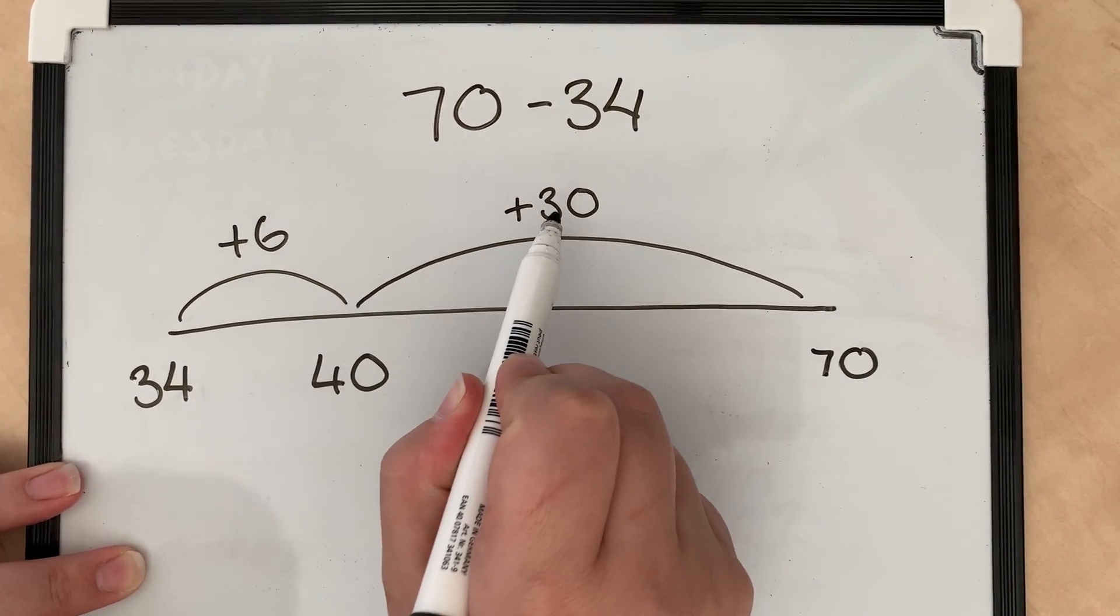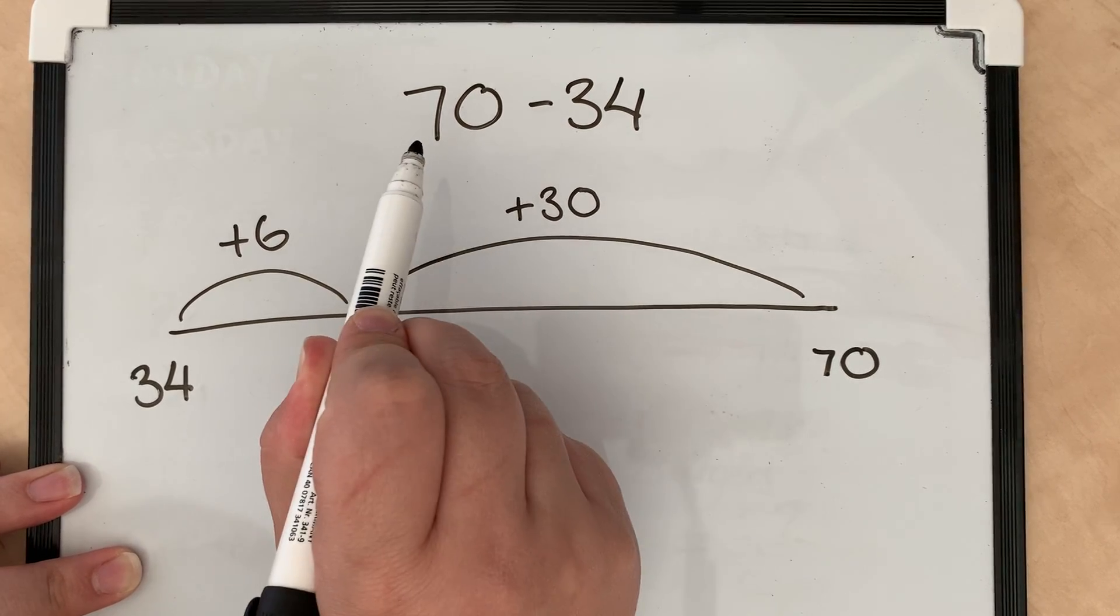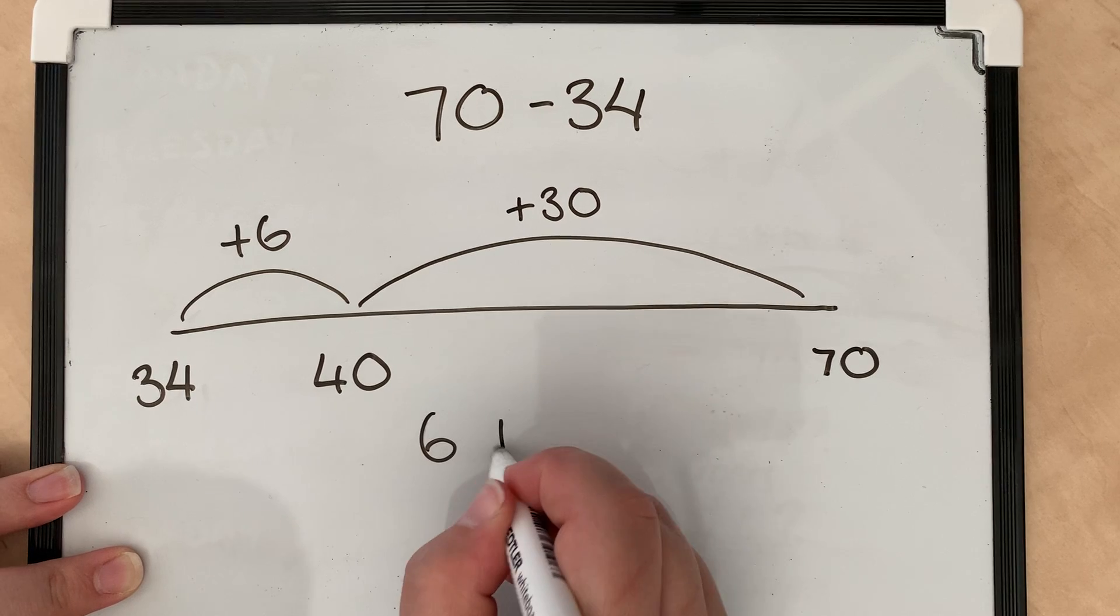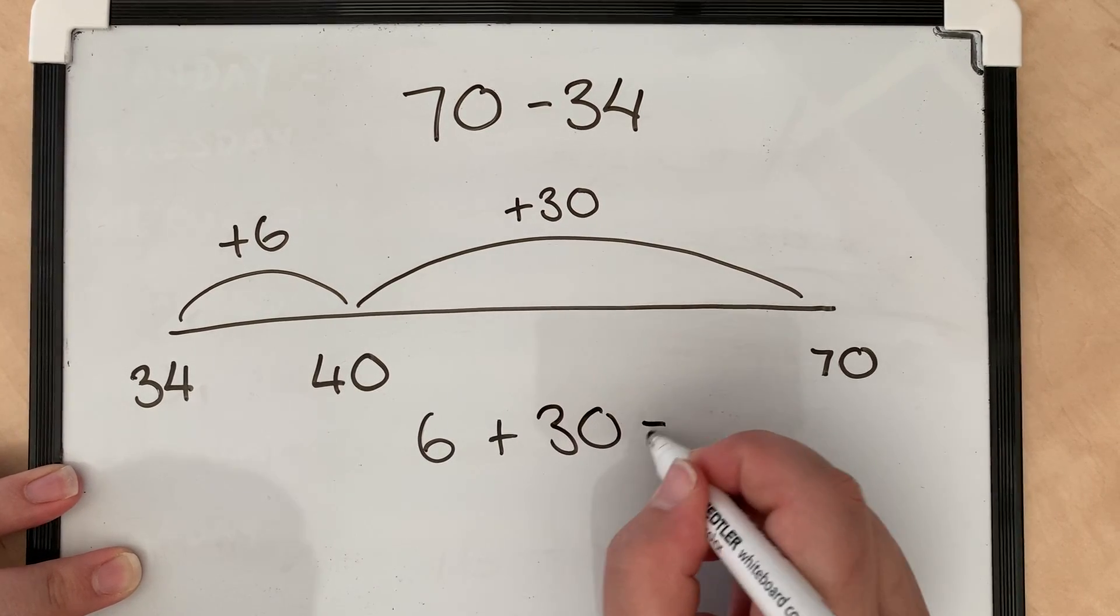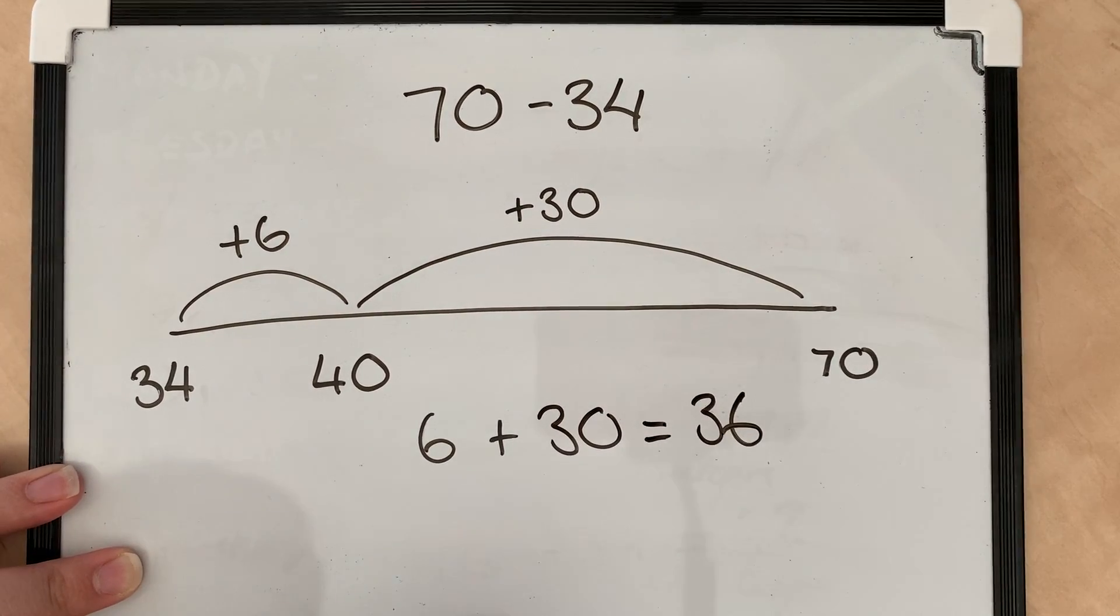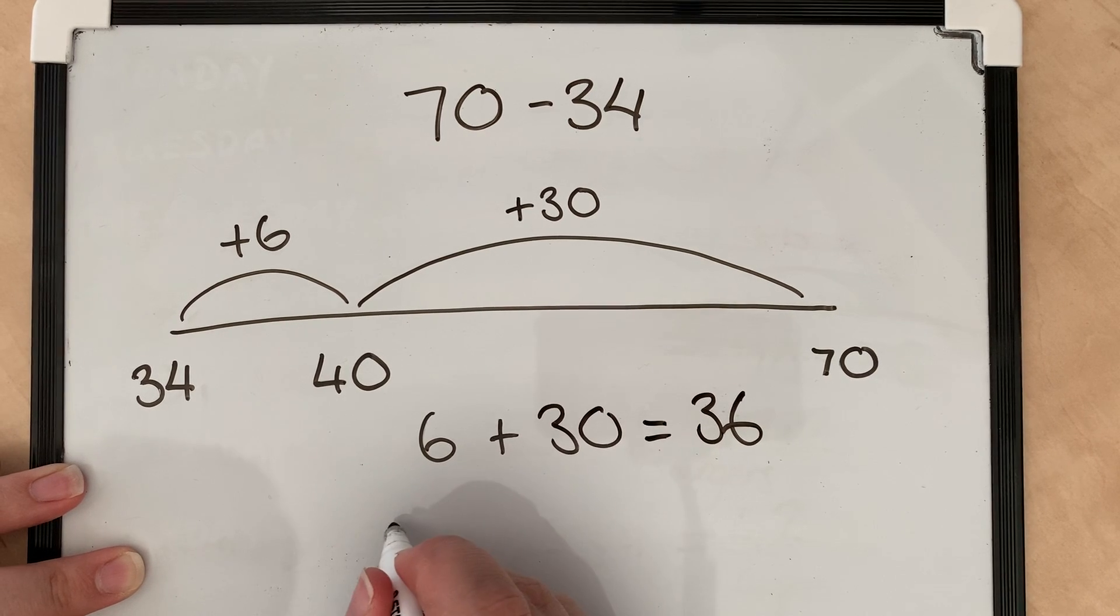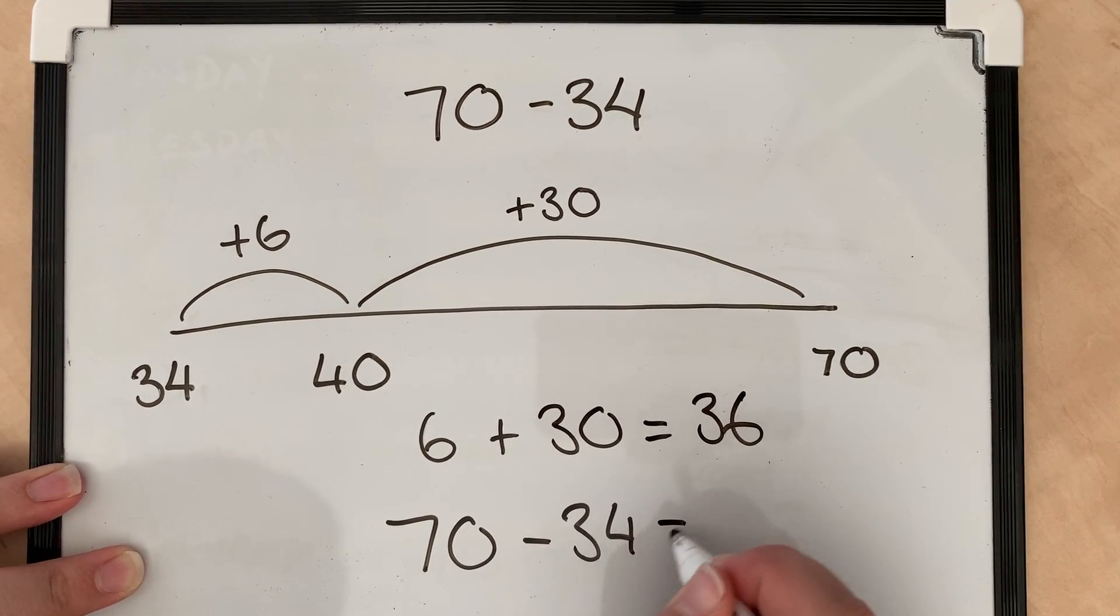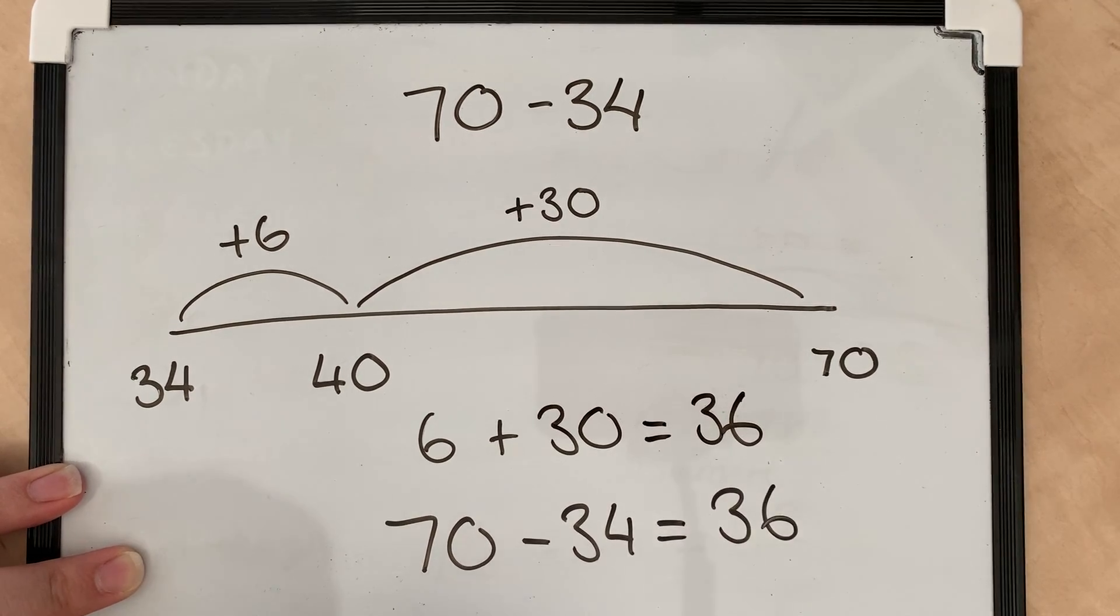And then all you need to do is add these two numbers to give your difference between 70 and 34. So 6 add 30 equals 36. So that gives us the answer: 70 take away 34 equals 36.